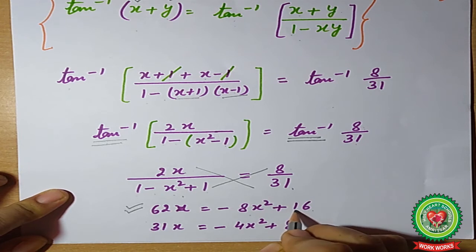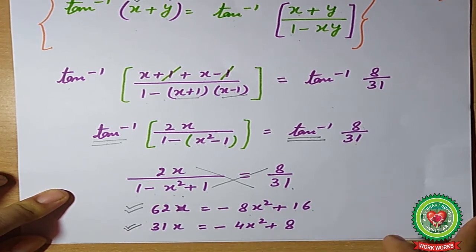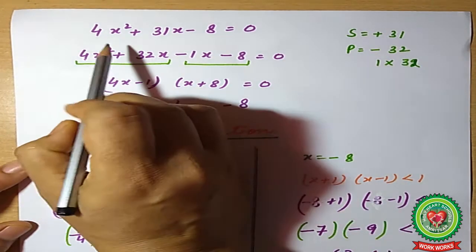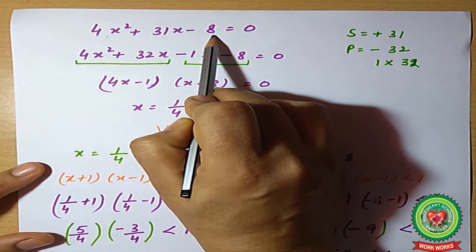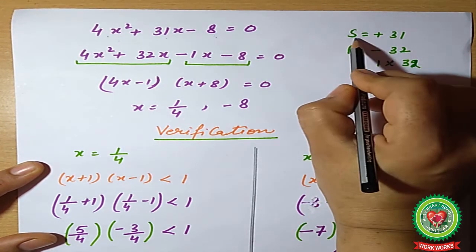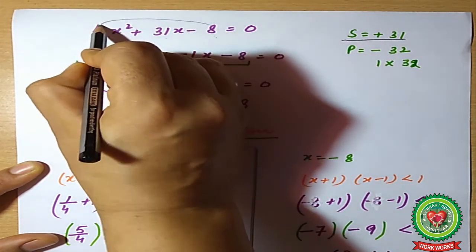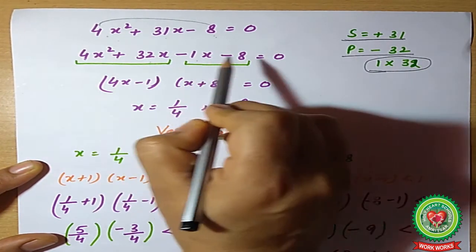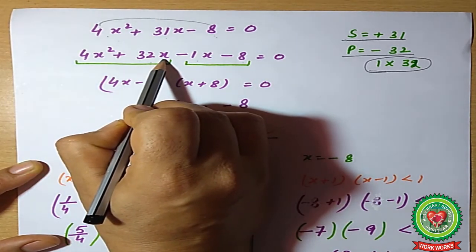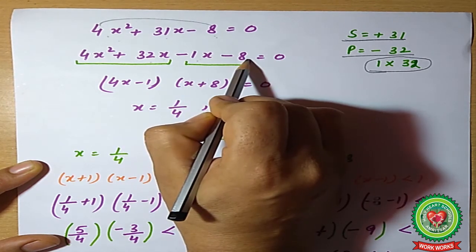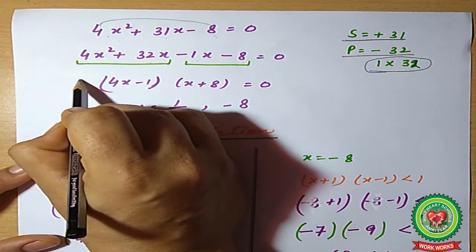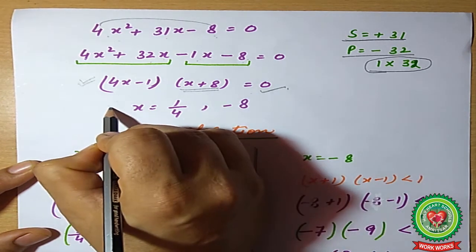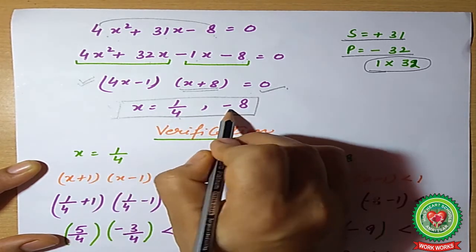Rearranging into quadratic form: 4x² − 31x + 8 = 0. Using the sum-product method: sum = 31, product = 4×8 = 32, factors are 32 and 1. This gives 4x² − 32x + x − 8 = 0, factoring as 4x(x−8) + 1(x−8) ... rearranging: (4x−1)(x+8) = 0. By the zero-product rule, x = 1/4 or x = −8.